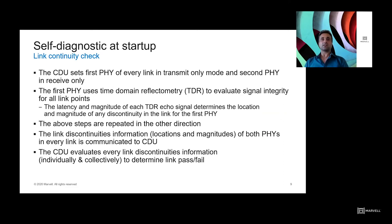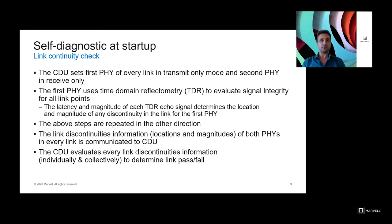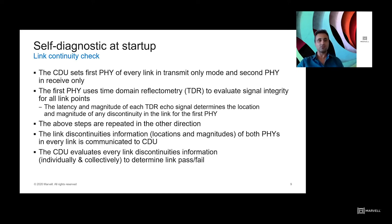The next check is link continuity or signal integrity. In this test mode, the CDU sets the first PHY of every link in transmit mode and the second PHY in receive. The first PHY transmits a pulse and uses a TDR scheme to evaluate signal integrity and detect discontinuities in the link. These steps are repeated in the other direction and for all links. The link discontinuity information — the location and magnitude of discontinuities for both PHYs in every link — is communicated to the CDU, which compares it against established metrics for those specific links based on magnitude and number of discontinuities to determine if the link is acceptable.